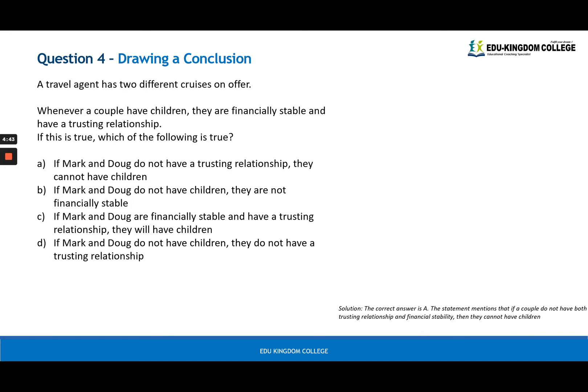So this is a relationship drawing kind of question. We know that when a couple has children, they are financially stable and have a trusting relationship. Now, this is not to be generalized. In real life, this may not be the case. But we have to take everything for what it is. So when a couple has children, they must be financially stable and suggesting both have a trusting relationship. If this is true, which of the following is true? Now, A is actually the correct one. Because we know when they have children, they are financially stable and have a trusting relationship. So if they are missing either one of these, they cannot have children. In A, when Mark and Doug have a missing one, the trusting relationship, they don't have it. Therefore, using the information provided, we know that they cannot have children.